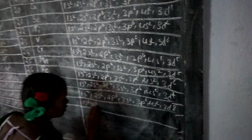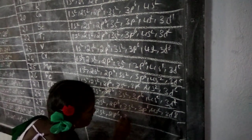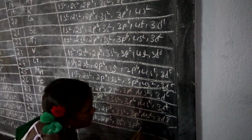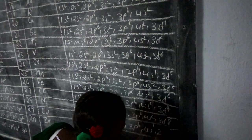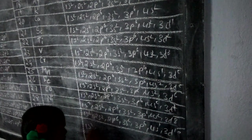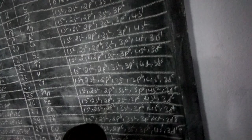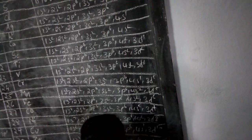1s2, 2s2, 2p6, 3s2, 3p6, 4s1, 3d10. 1s2, 2s2, 2p6, 3s2, 3p6, 4s2, 3d10.